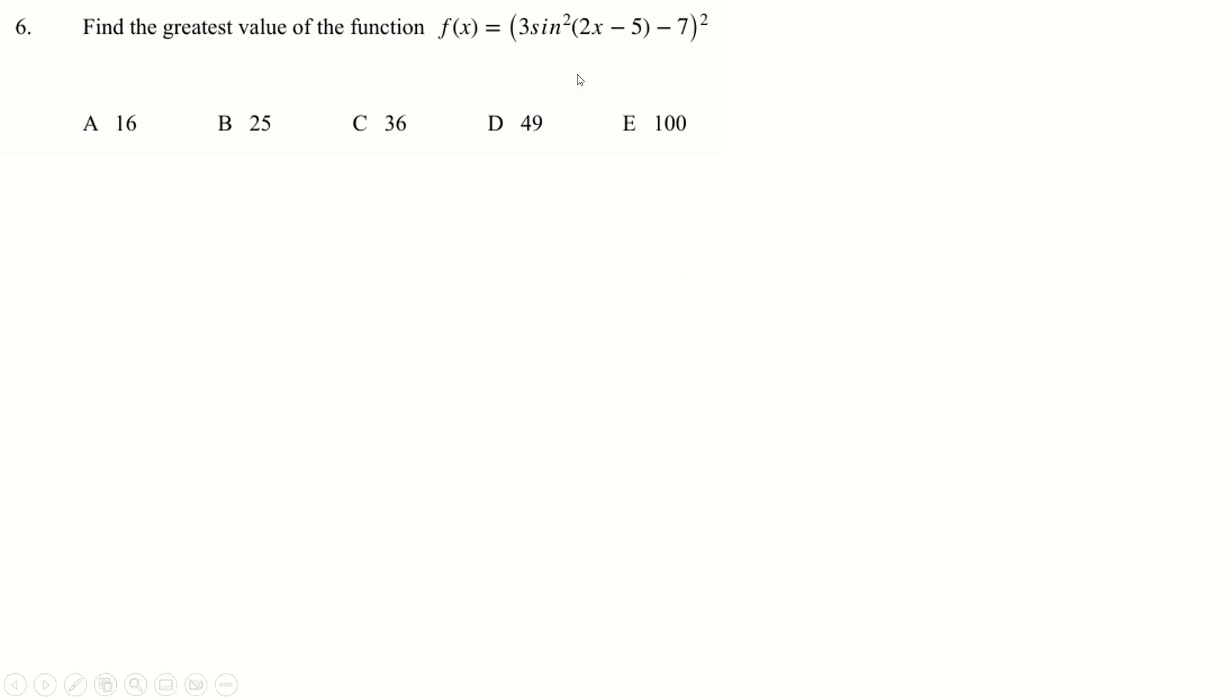Find the greatest value of this function. A couple of ways you could do this. I decided to first say that sine squared is between zero and one, because sine is between minus one and one. So when you square it, it's between zero and one. So if I times that by three, it's between zero and three. And I just want to square the biggest absolute number I can, the furthest thing from zero, because it will square to a positive anyway. I could put in zero and get 49. Or I could put in three, but that gives me a smaller absolute number. So 49 is the highest thing we're able to get here.